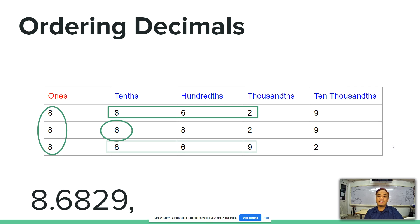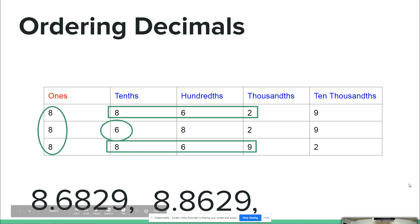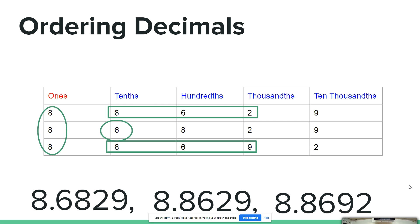In 10's, 100's and 1000's place, we can compare these two and we know that 862 is smaller than 869. Therefore, we have 8.8629 followed by 8.8692. They are now arranged in increasing order.